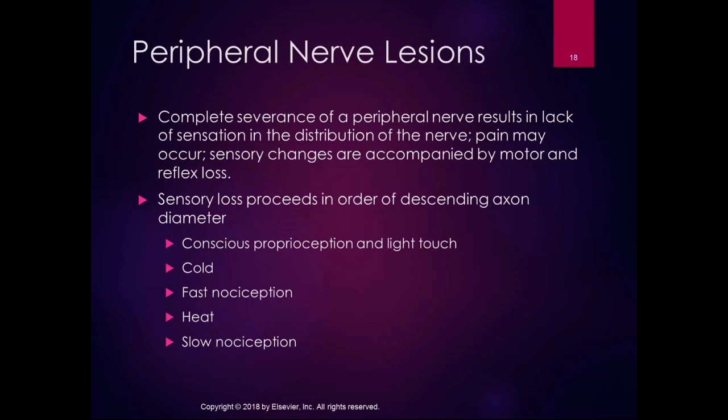Then you lose slow nociception last. The slow nociceptors — the C fibers — are the smallest ones, so you lose those last. That means you lose all your other sensory function but still have pain. It's related to axon diameter.